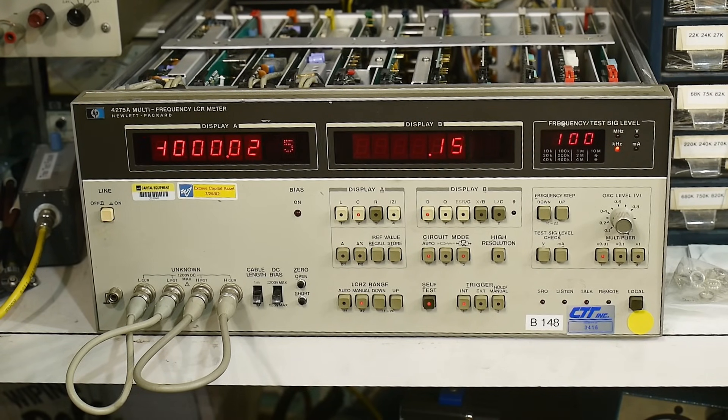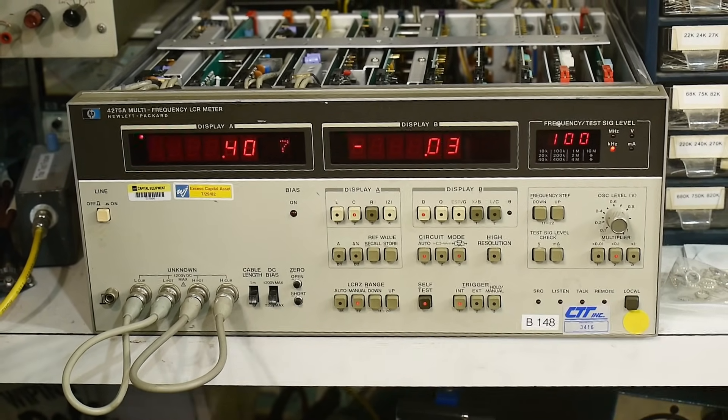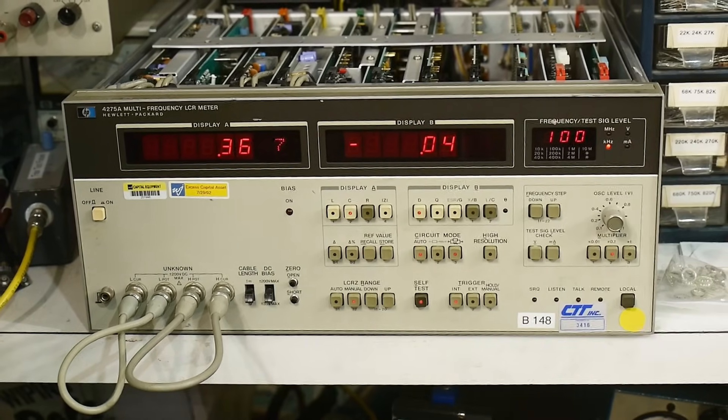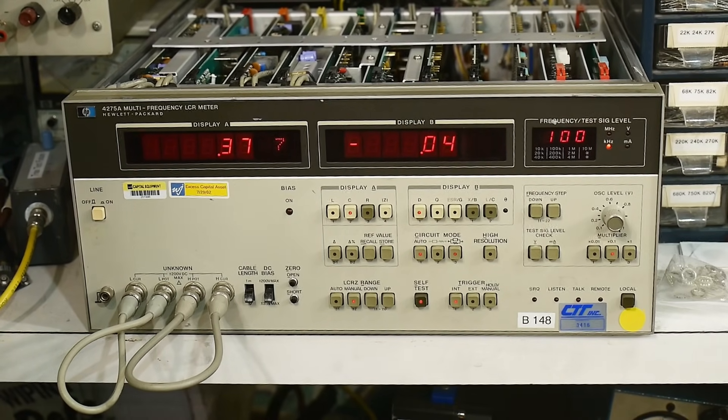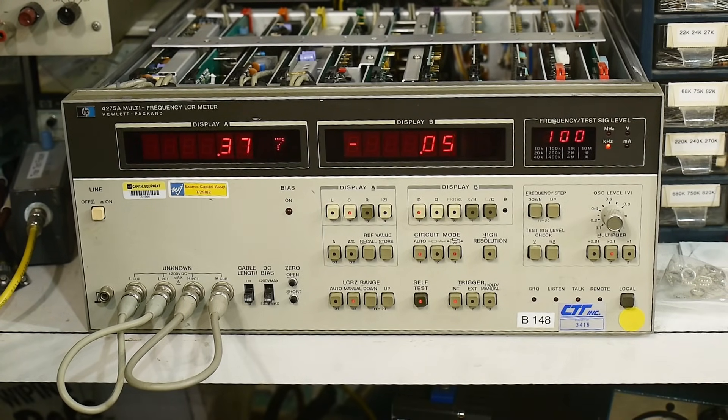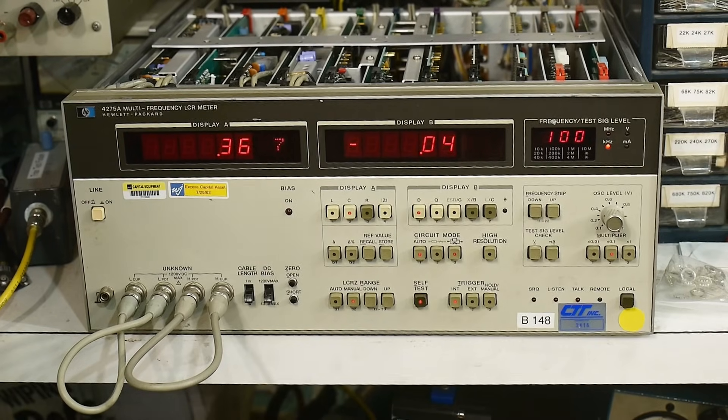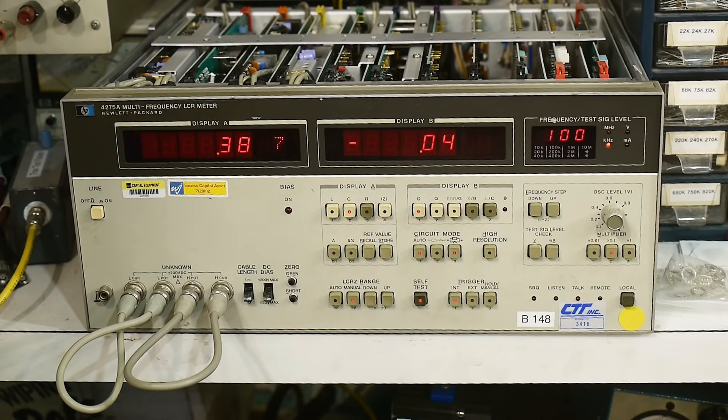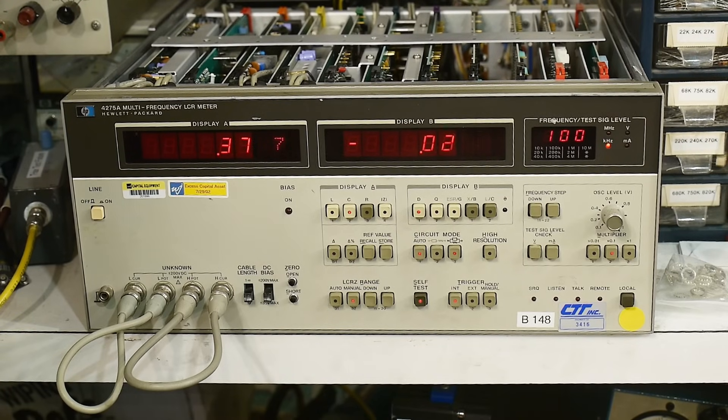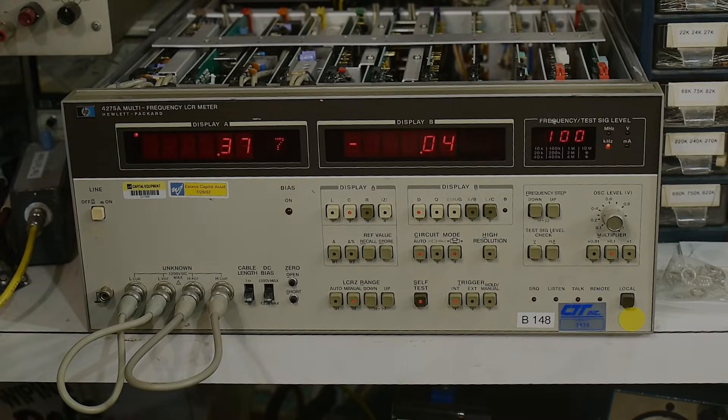And then we press that one. Now we should have display 7. Multiplier is automatically set to 0.1. Set test frequency to 100 kilohertz. Display should be 0, 0, plus or minus 1,000 counts. Looks fine to me. So it's all checking out good so far.